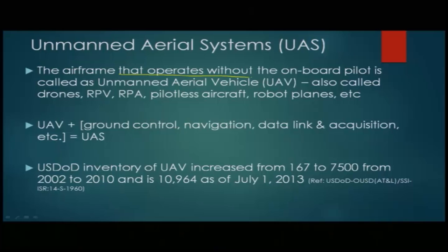Starting with what is an unmanned aerial system — there are many definitions and names for this. From the Systems Engineering standpoint, it is a system, which is why we call it UAS — unmanned aerial systems. It includes the vehicle, the communication, the payload, and every aspect of it. The UAV — the unmanned aerial vehicle — is the airframe, the aircraft that operates without an onboard pilot. There is no human being on the flying platform to control it.